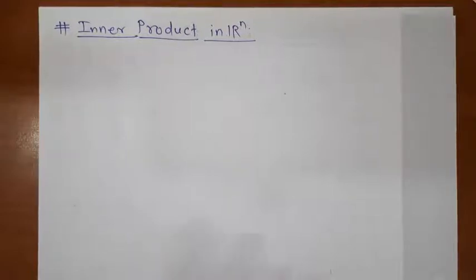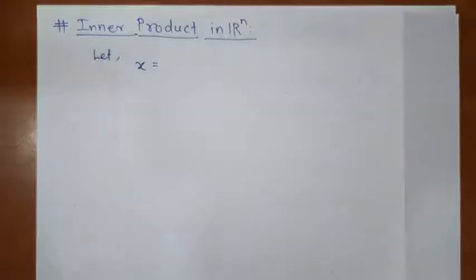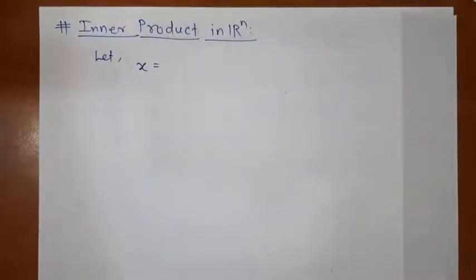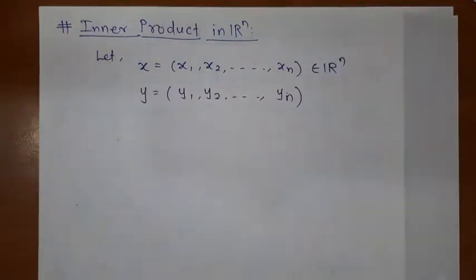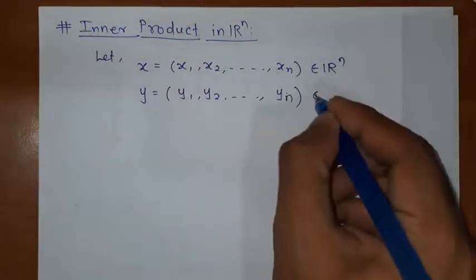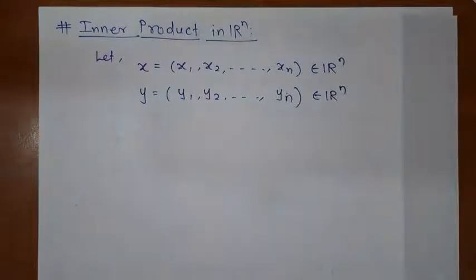Let us take two elements of Rn. The first element is X, having n number of components, and consider Y with components Y1, Y2, and so on, Yn, belonging to Rn. So we have these two elements of Rn. Let us see how to take the inner product of these two elements.